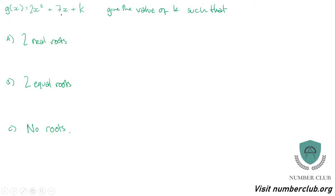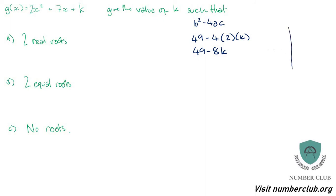Next: g of x equals 2x squared plus 7x plus k. Give the value of k for two real roots, two equal roots, and no roots. Again, find the discriminant: b squared minus 4ac is 49 minus 4 times 2 times k, giving 49 minus 8k. Let it equal 0: 49 equals 8k, so k equals 49 over 8. In this case the discriminant is a linear — it's fine, always graph it though.